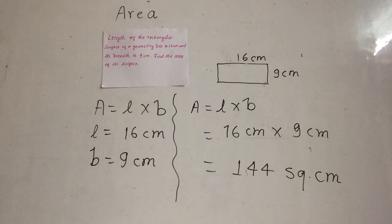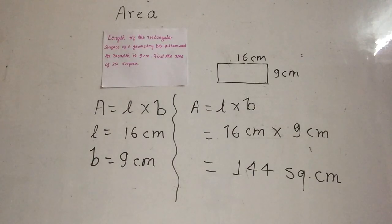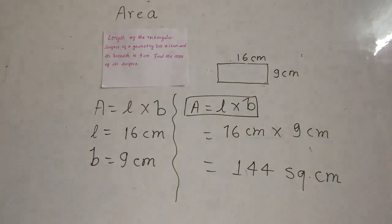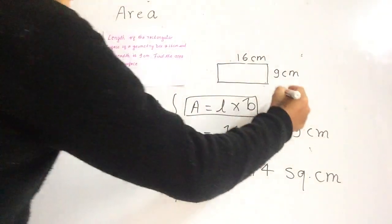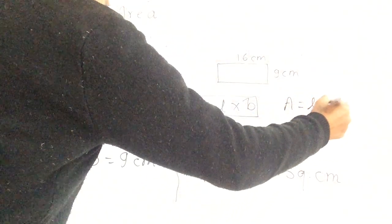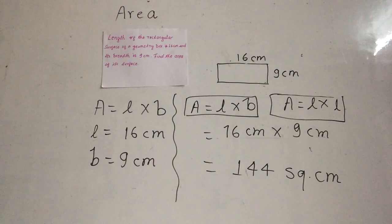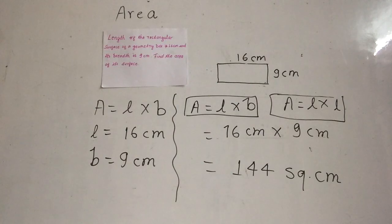In this way we can find the area of a square or the area of rectangular shapes. Always remember these formulas: area of a rectangle is length times breadth, and area of a square is length times length. I hope this video is helpful to learn the area of square and rectangular shapes. Thank you for watching.